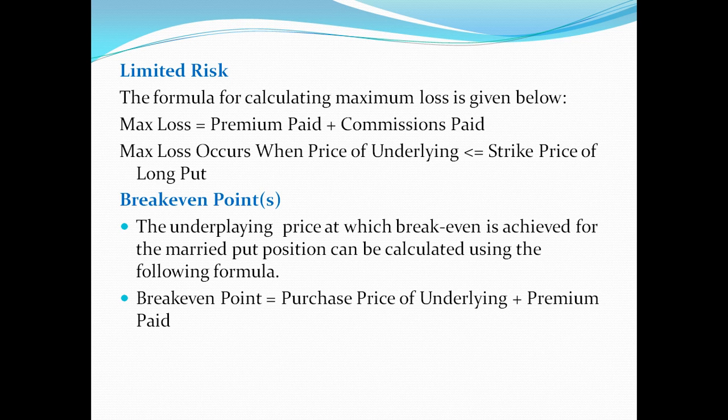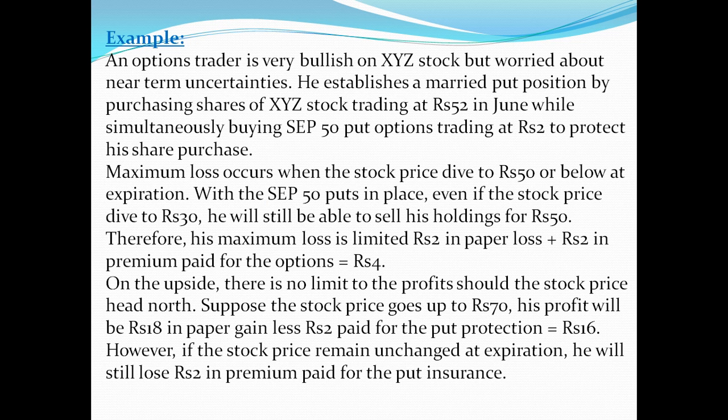The married put has limited risk. The formula for calculating maximum loss is: maximum loss equals premium paid plus commission paid. Maximum loss occurs when the price of the underlying is less than or equal to the strike price of the long put. The break-even point formula is: break-even point equals purchase price of underlying plus premium paid.